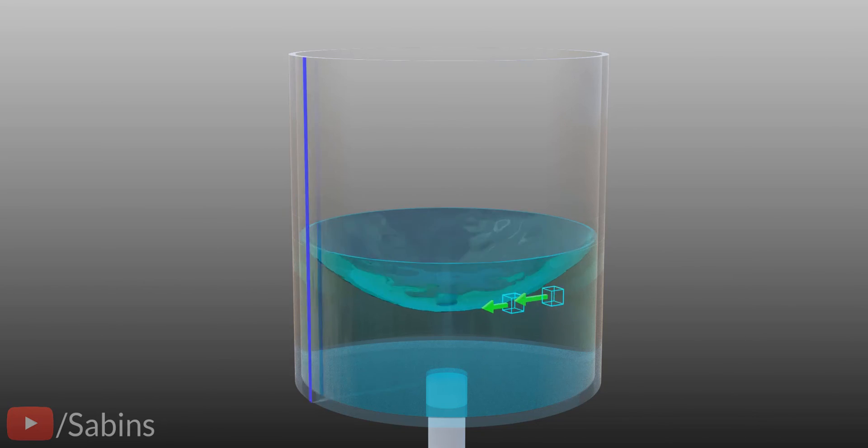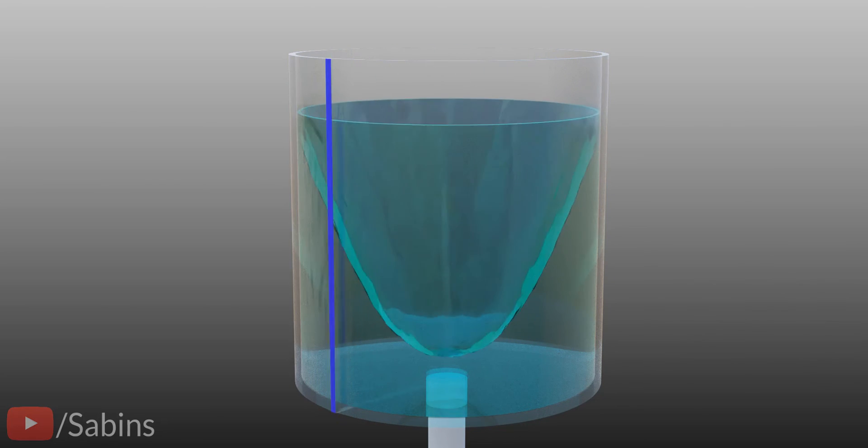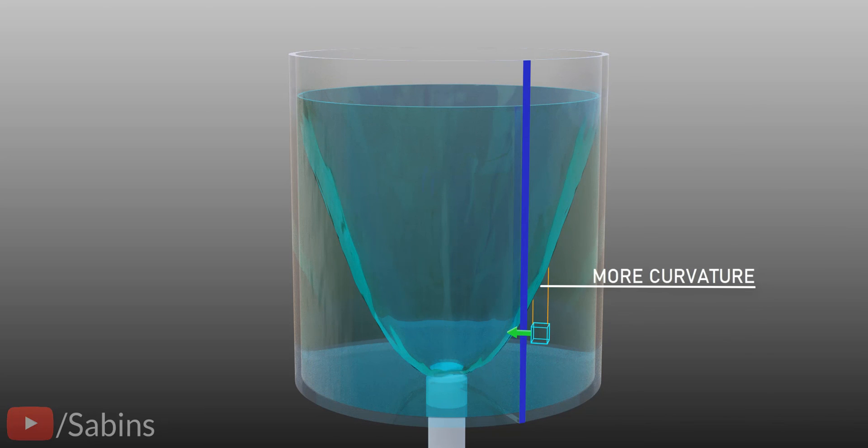When the water volume rotates faster, each particle demands more centripetal force, or more pressure difference, across the particle. Therefore, the water surface curves more than in the previous case, or you feel like the water is going outward.